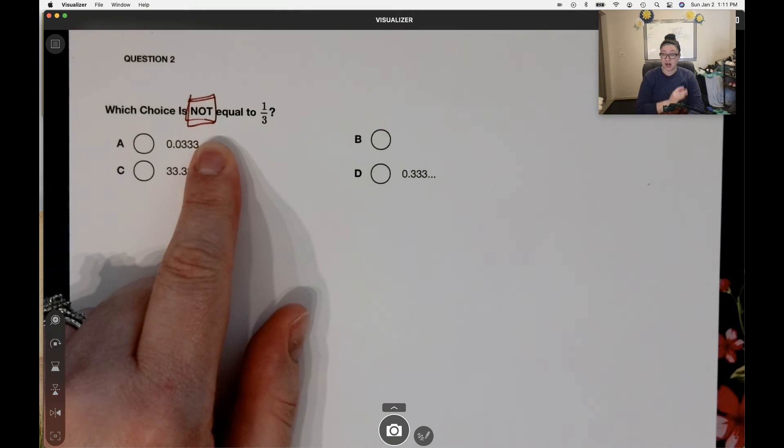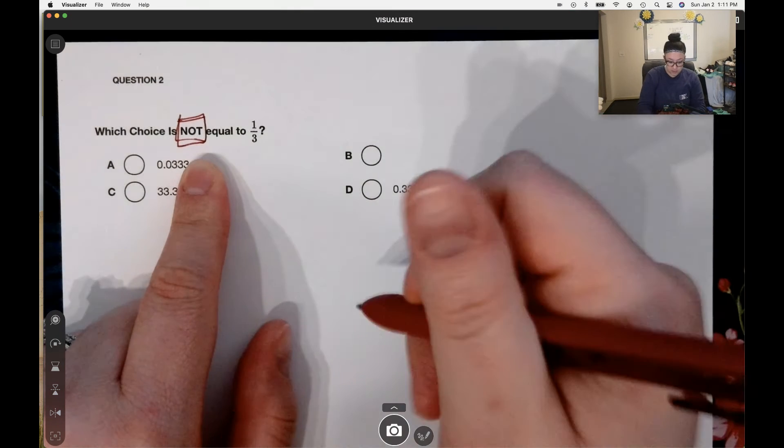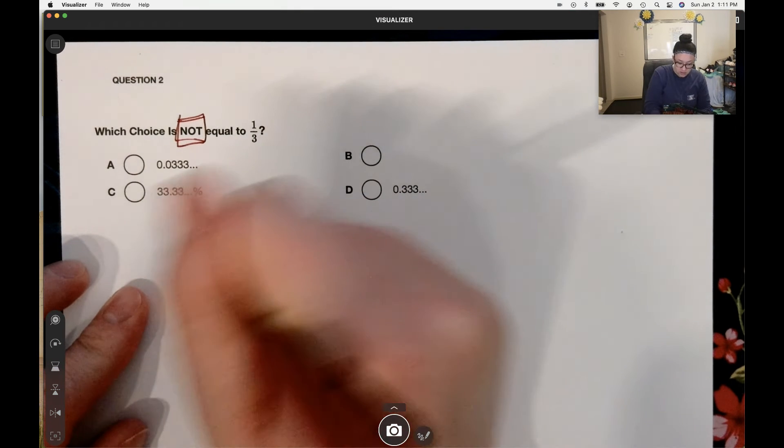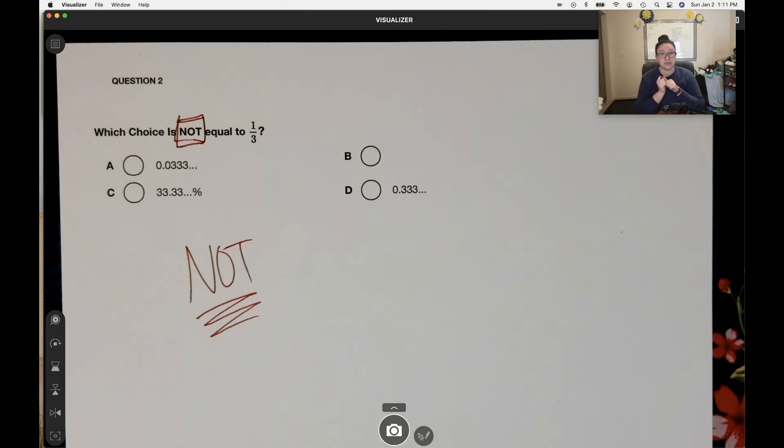If you want to highlight it, box it, whatever. Write it down on your paper too. Not. Write it again and again so you see it and make sure you're doing the steps correctly. Which one of those is not equal to one-third?